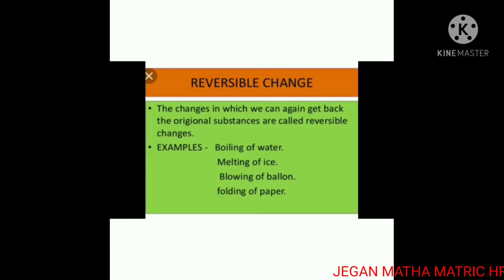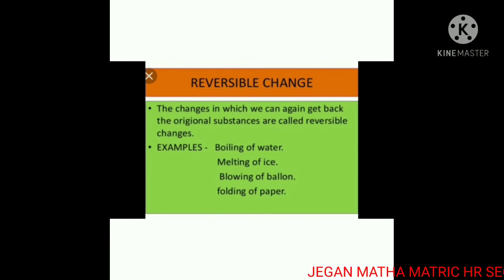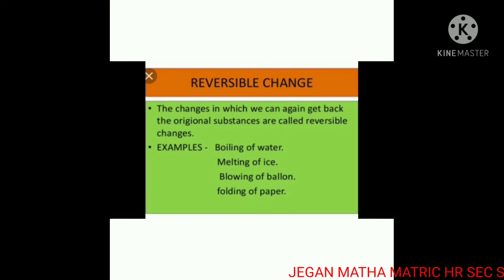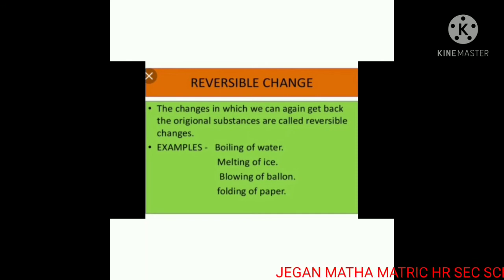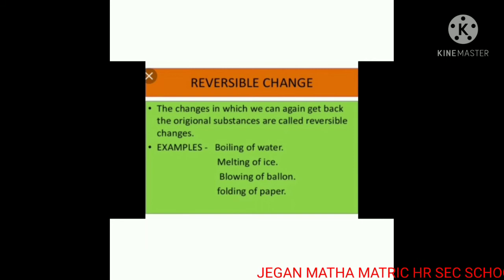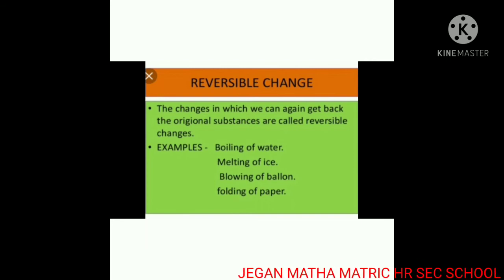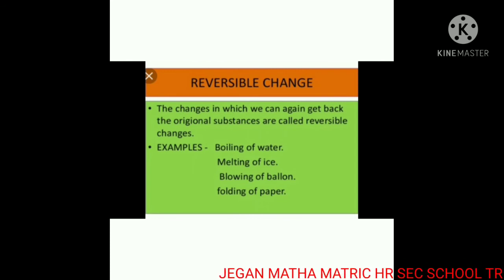The changes in which we can again get back the original substances are called reversible changes. For example: boiling of water, melting of ice, blowing of a balloon, and folding of paper.